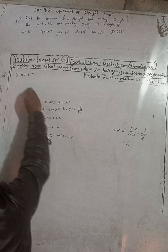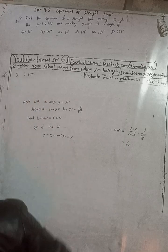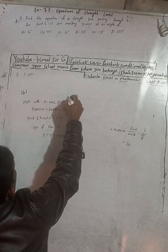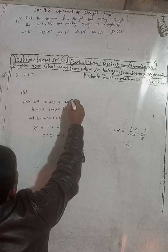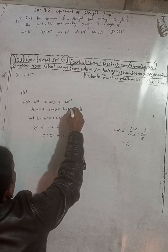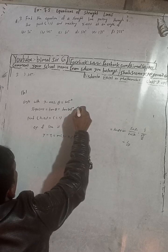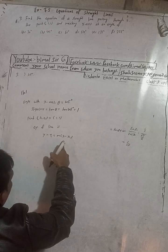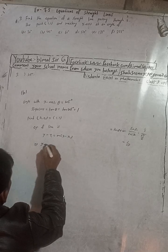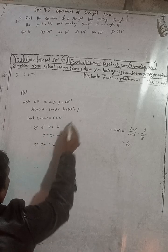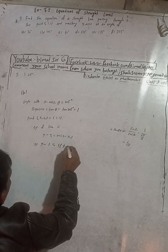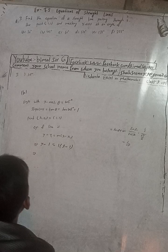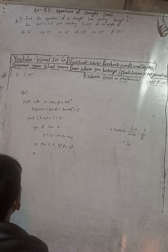For part (b), theta equals 45 degrees. So tan 45 degrees equals 1. The point is the same (1, 1), so the equation of the line is y minus y1 equals m into x minus x1. This implies y minus 1 equals 1 into (x minus 1).